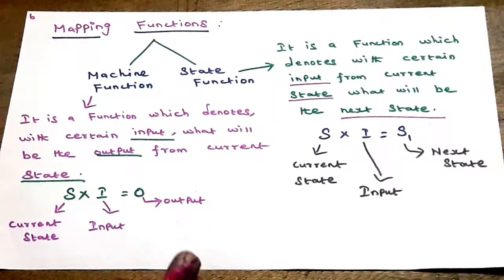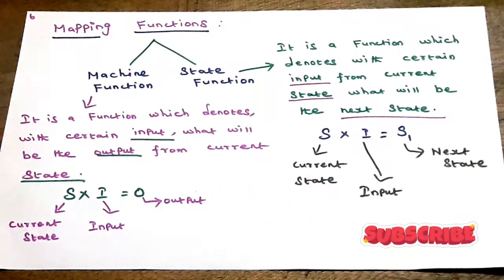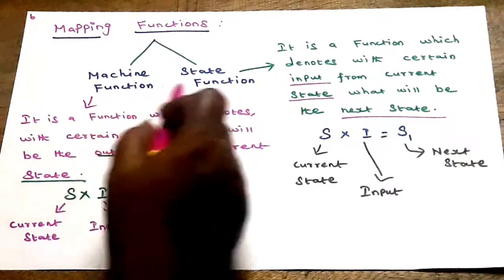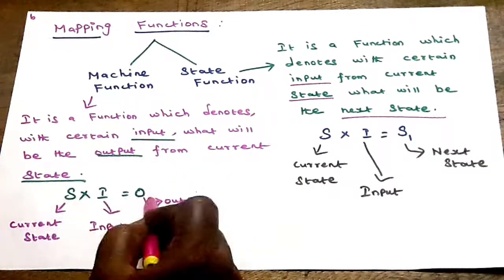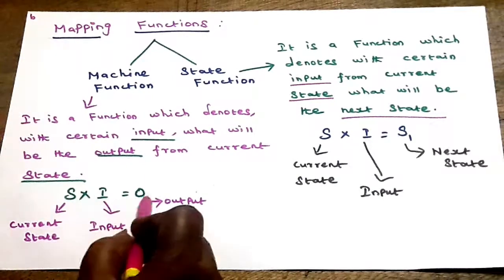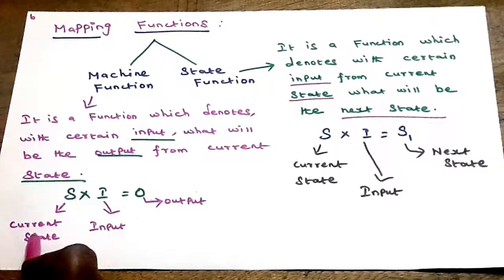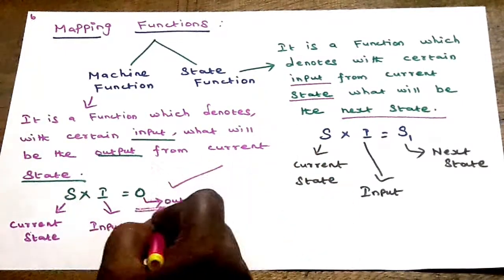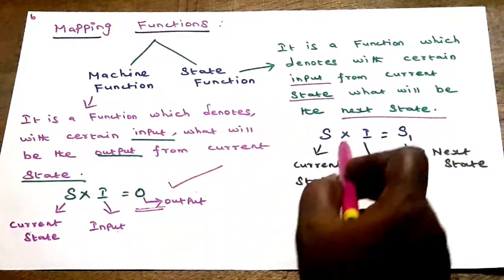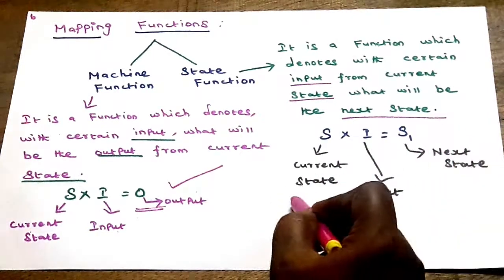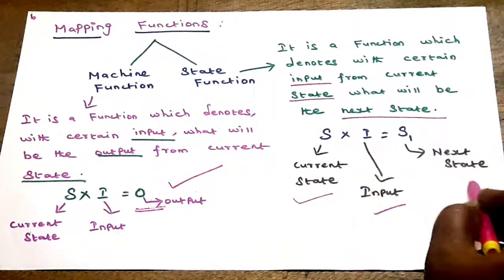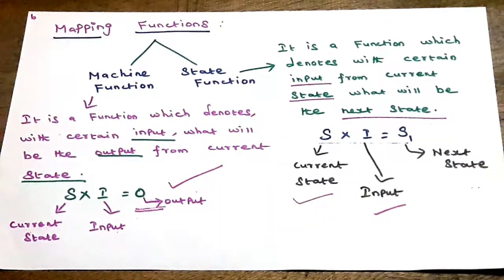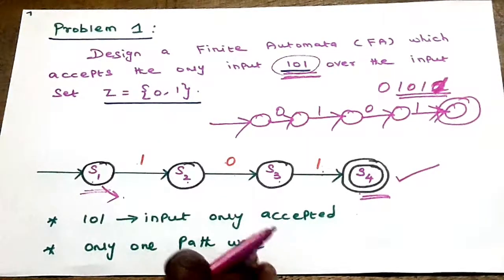Now the mapping function. The mapping functions and formulas are divided into two functions: machine function and state function. Machine function: S into I equals O — S is the current state, I means input, and combining current state and input gives the output. State function: S into I equals S1 — combining current state and input gives the next state. These two formulas are very important.